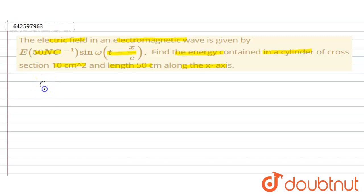In the given question, it is given that E₀ = 50 Newton per C, area = 10 cm², and length = 50 cm.